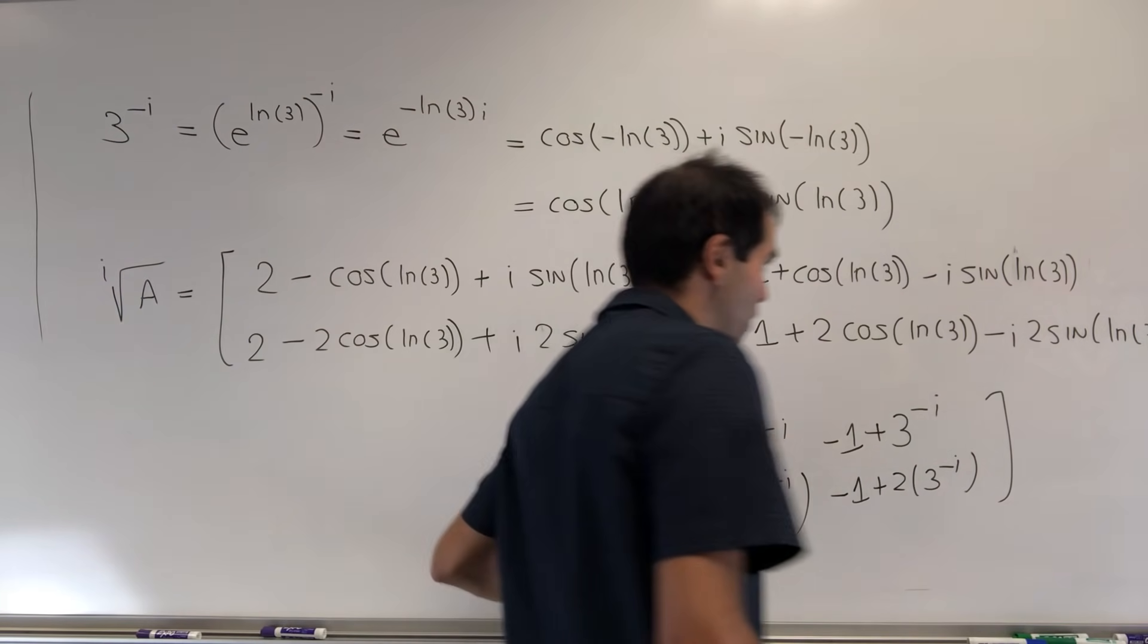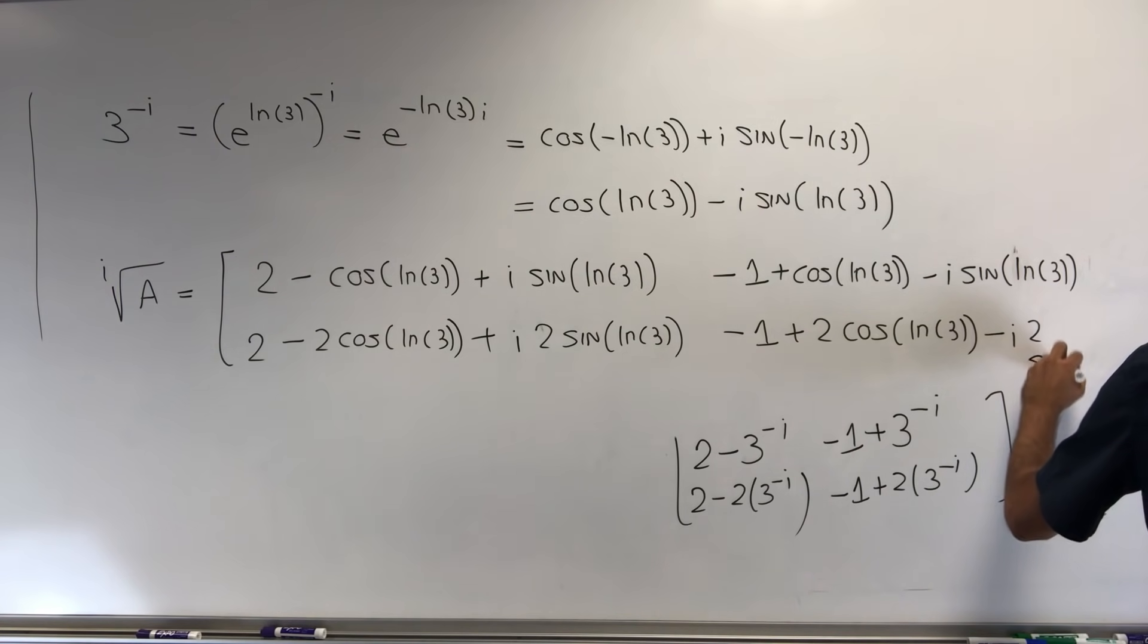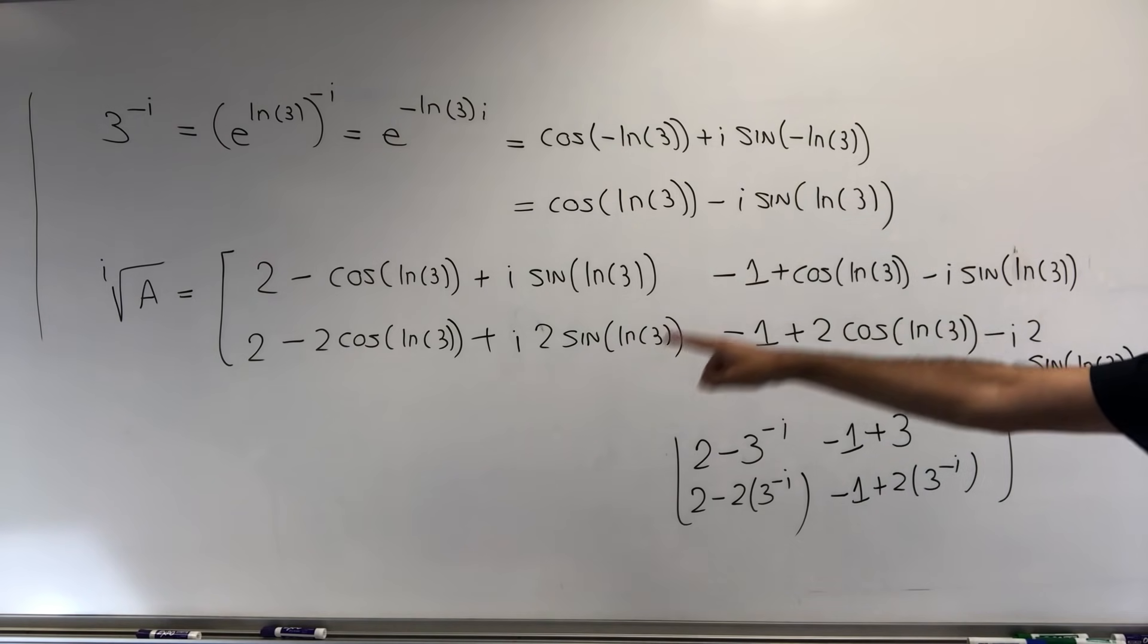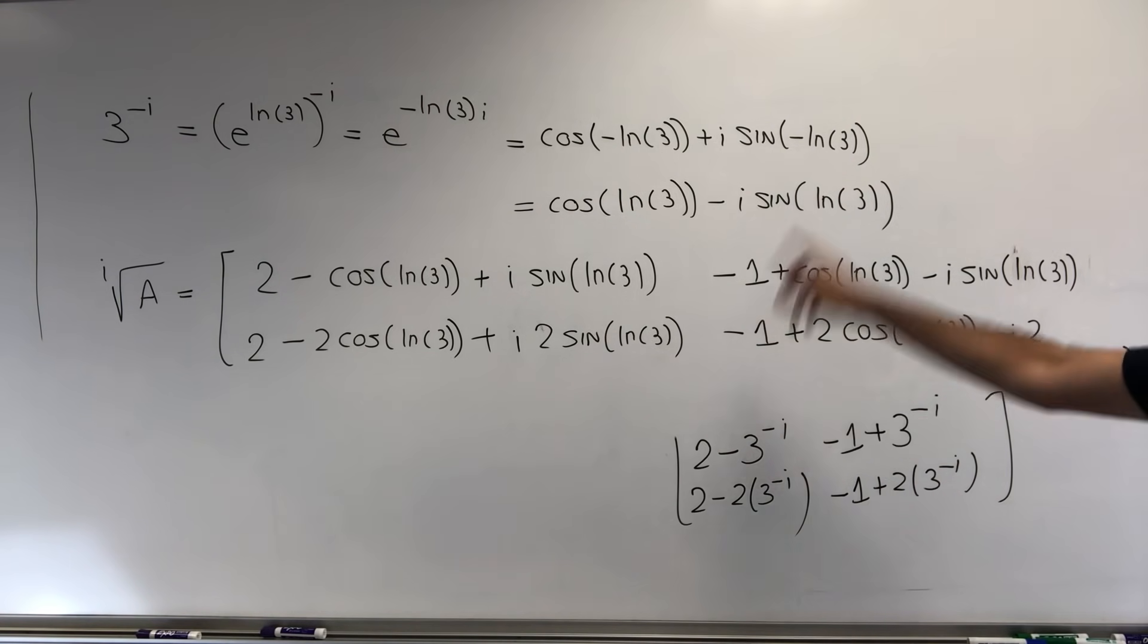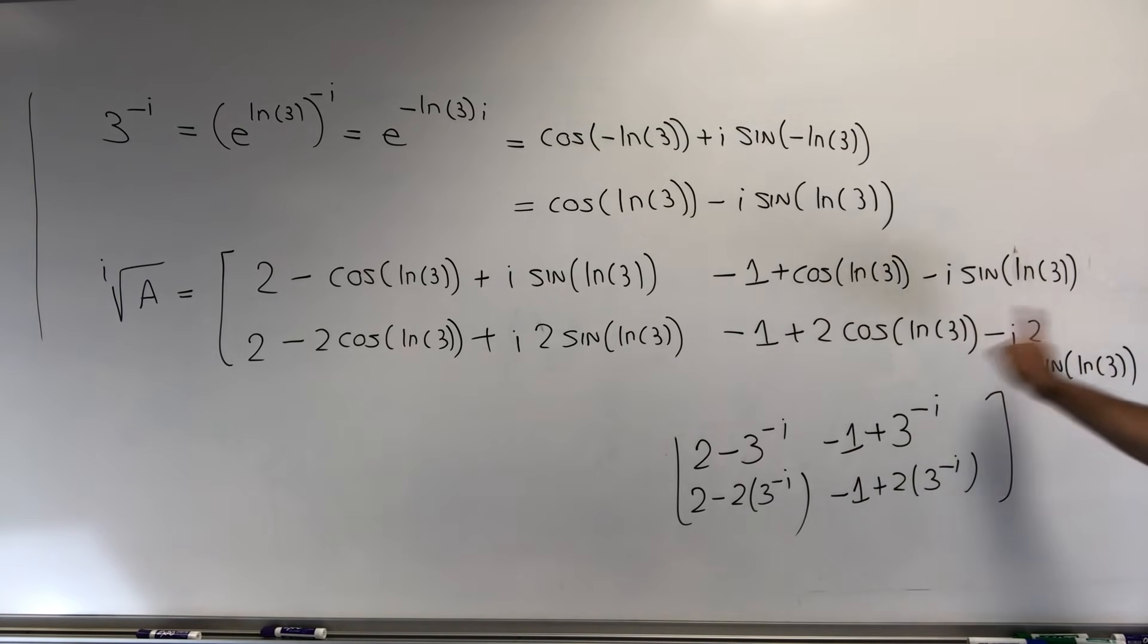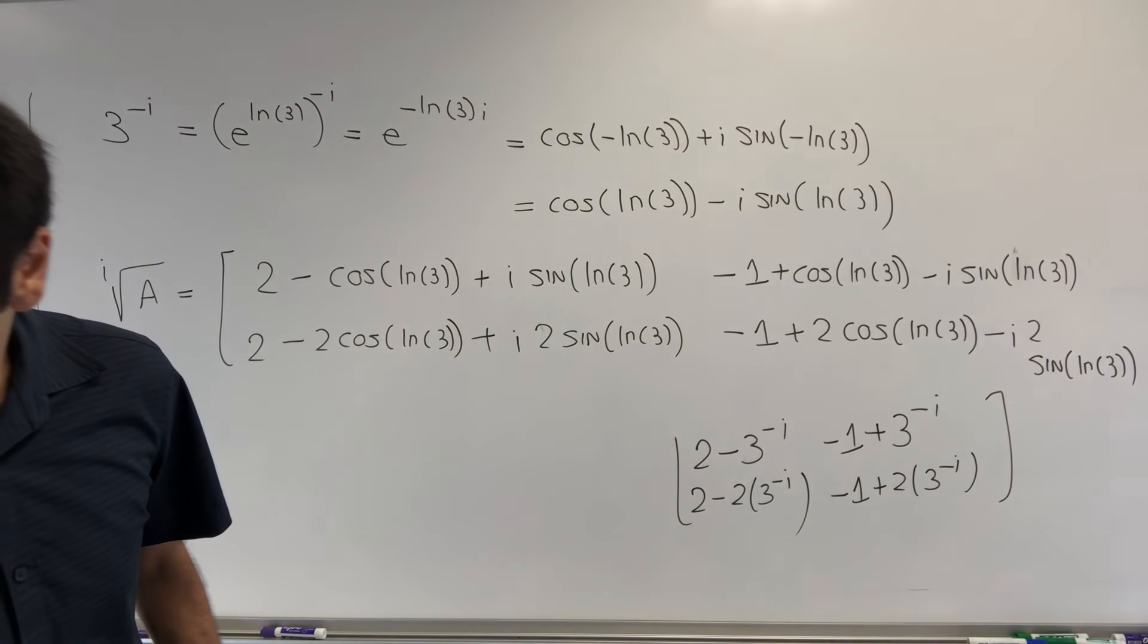It seems it went a bit above the whiteboard, so here, -2·sin(ln(3)). OK. And let me just double check if that's correct. So again, 2 - cos(ln(3)) + i·sin(ln(3)). Very good. -1 + cos(ln(3)) minus. OK. And then 2 - 2 plus, and then -1 + 2·cos. Yeah. So that is the answer in terms of real and imaginary parts.